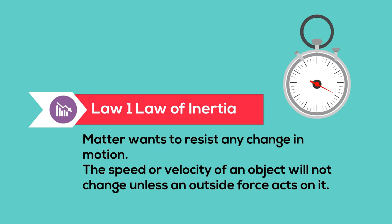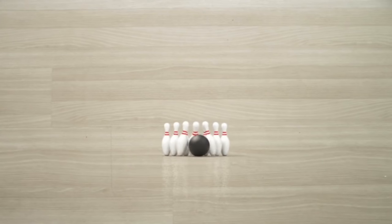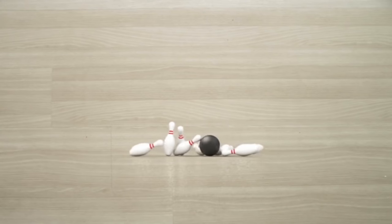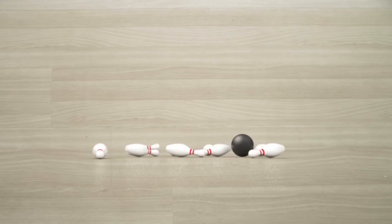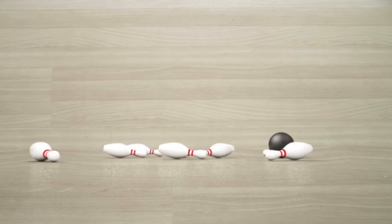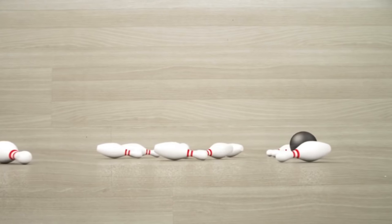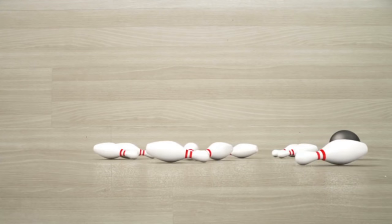For example, this bowling ball would travel in a straight line forever, but the friction of the floor and the air, plus striking the pins, change the velocity of the bowling ball.